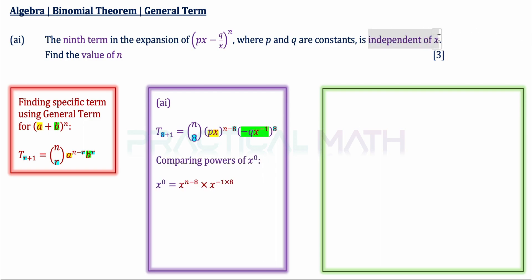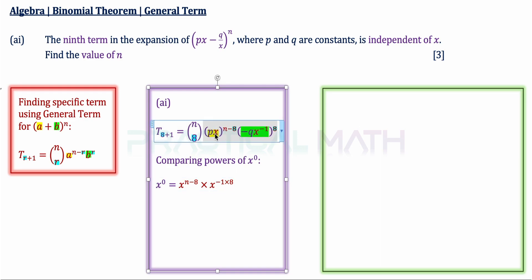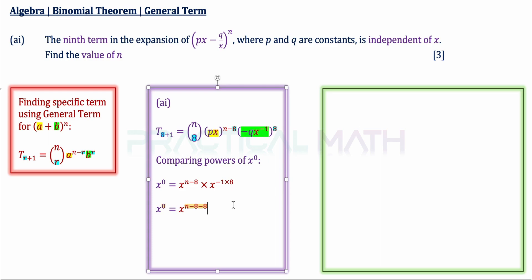When the question says independent of x, it refers to the term with x to the power of 0, since x⁰ = 1, making it a constant. We extract the powers of x: x^(n-8) multiplied by x^(-1×8) gives x^(n-8-8). Setting the power equal to 0: 0 = n - 16, so solving for n gives us n = 16. That's the answer for Part A1.